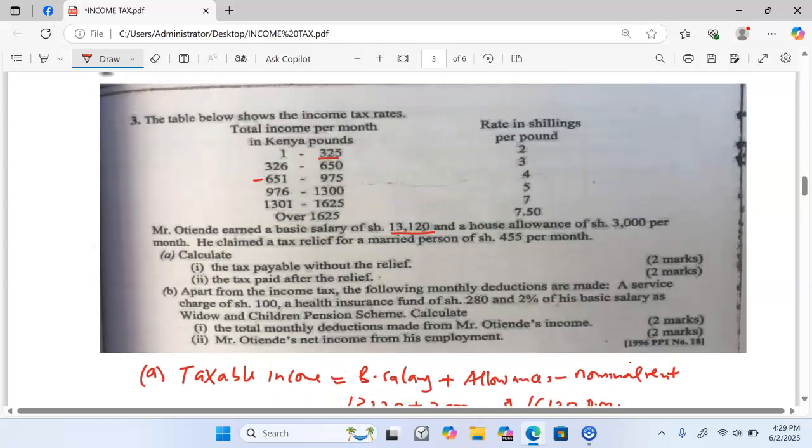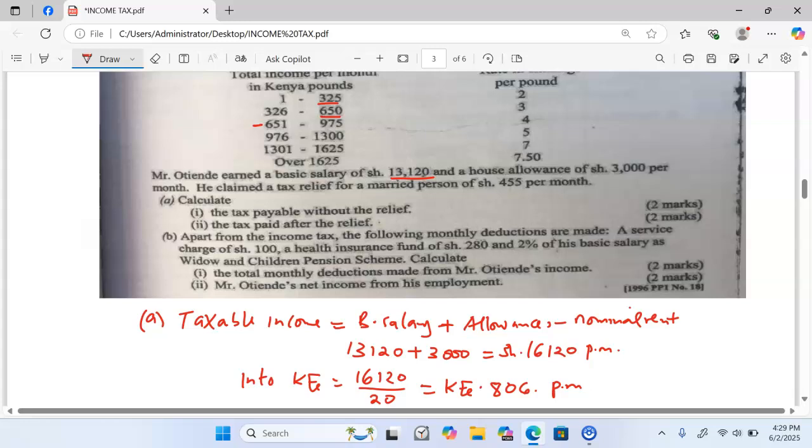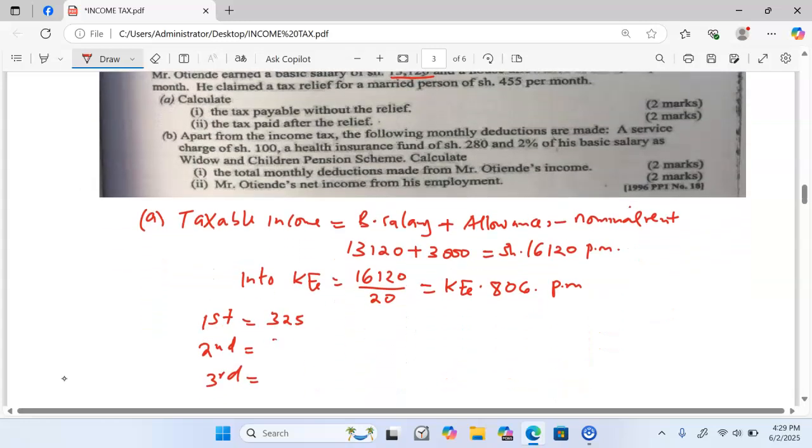In the second bracket, we take the maximum second minus maximum first. So, that is 650 minus 325, which gives us 325.